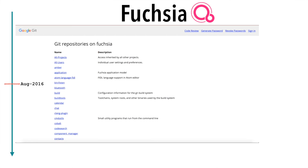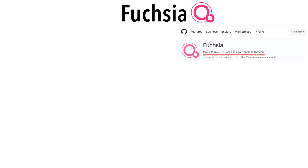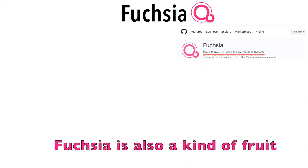There was no major announcement or any fanfare. And at about the same time, another repository appeared on GitHub for the new OS, which was being called Fuchsia. As you can see, it is just a combination of two colors that they are calling Fuchsia.